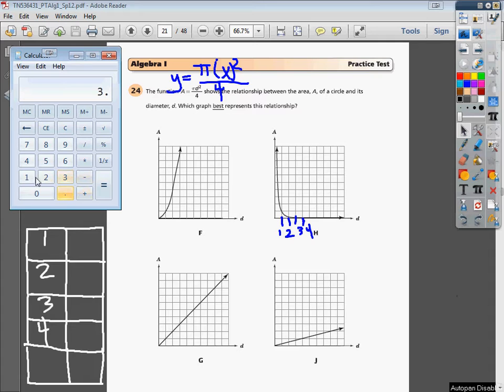So 3.14, and I'm going to plug 1 in right here, so times 1, times 1 again, because 1 times 1 is 1 squared. Hit equal, and then I'm just going to divide by 4, and it's going to give me 0.785. So I'm going to type right in 0.785.